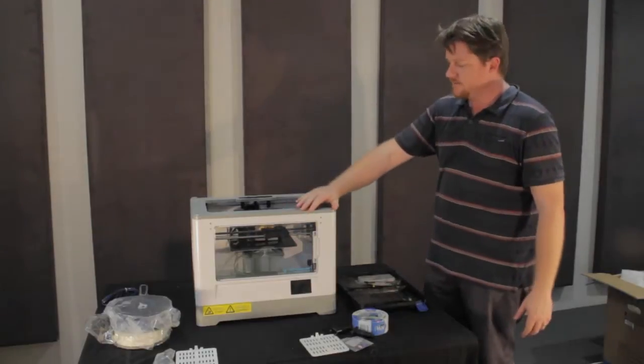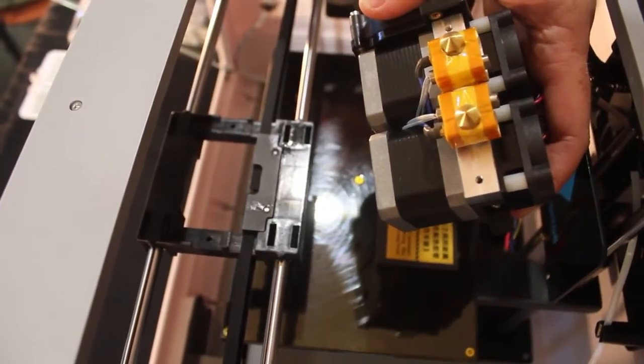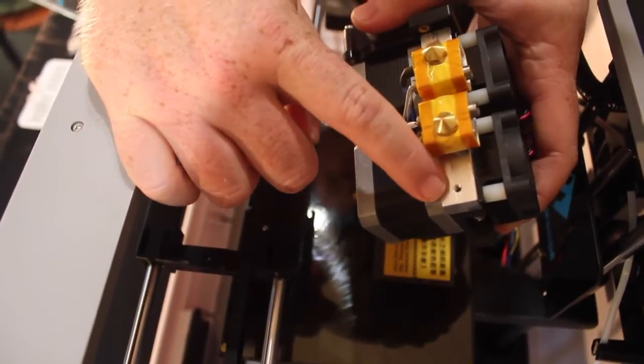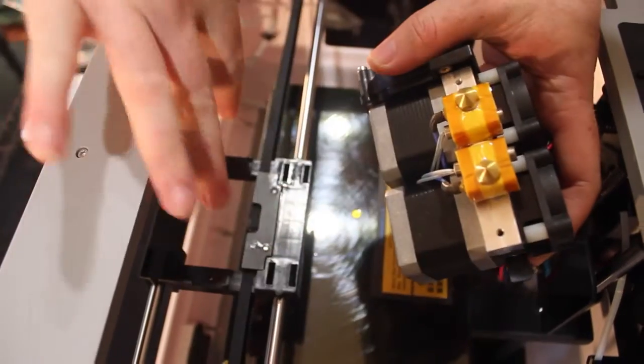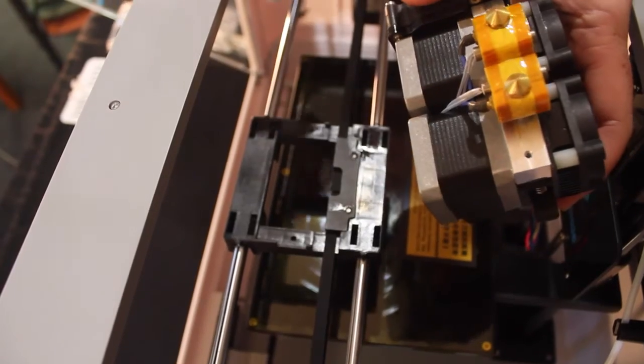The first thing we need to look at is how to mount the extruder. When we mount the extruder we need to line up the bolt holes. There's a metal plate with two holes in it and the plastic mount that the extruder sits on also has two holes in that.